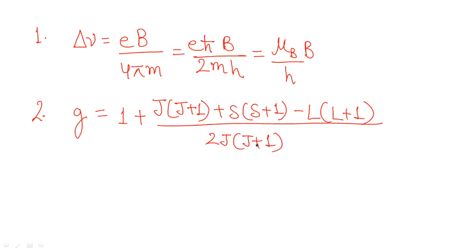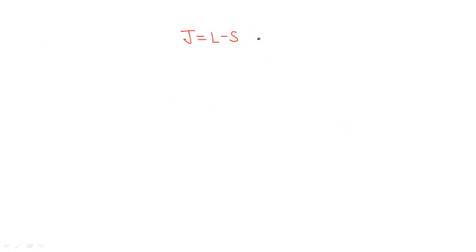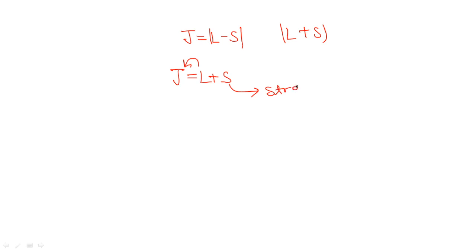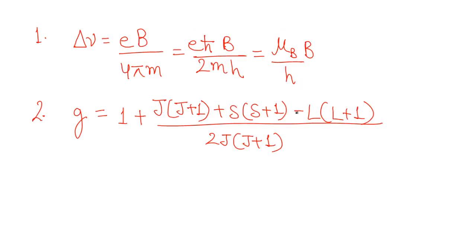To memorize the sign convention, use this trick: since J equals L plus S, taking L to the other side makes it negative, and S — which stands for 'strong' — remains positive. That is why L carries a negative sign and S carries a positive sign in the numerator. With this trick, you will never make a mistake in the signs of L, S, or g.